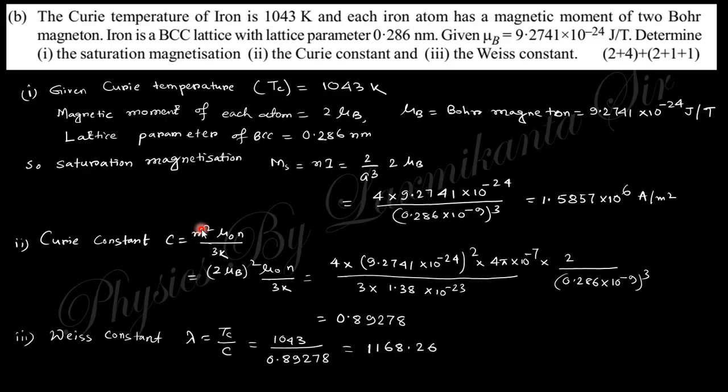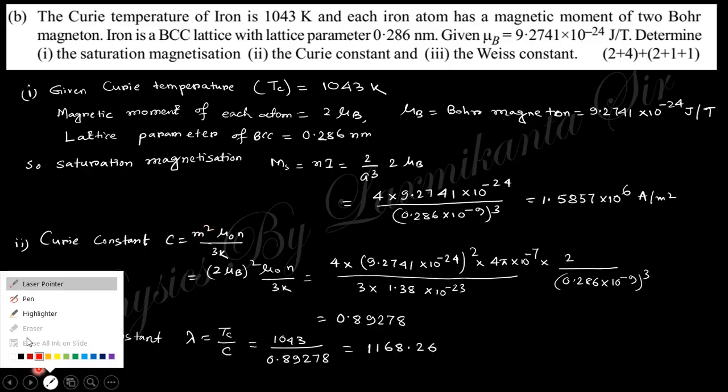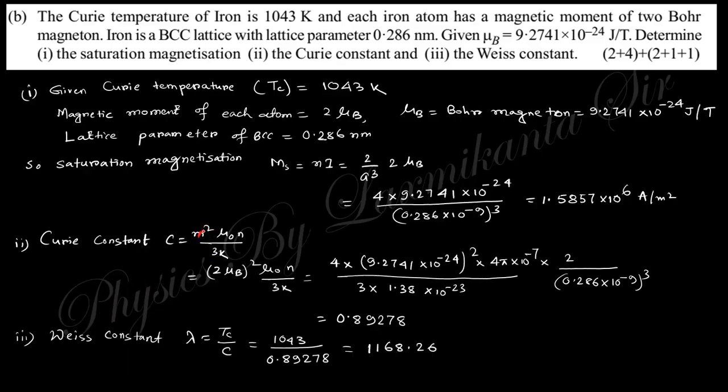The Curie constant is like that. M is 2 mu_B; this is i, which equals 2 mu_B, times mu_0 times N divided by k_B, where k_B is the Boltzmann constant. The Weiss constant is T_c by C.